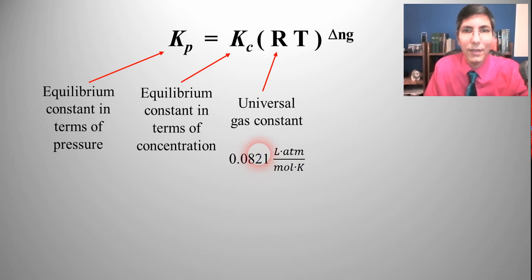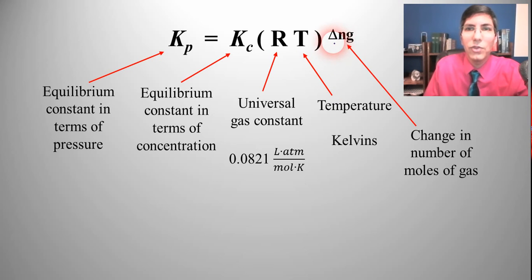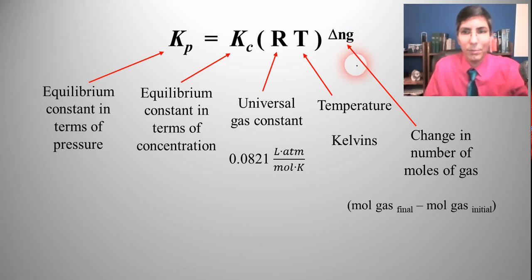So we have that universal gas constant 0.0821. Now T is temperature and that's measured in kelvins, and delta ng is the change in the number of moles of gas and I'll show you how to calculate that here in just a second.